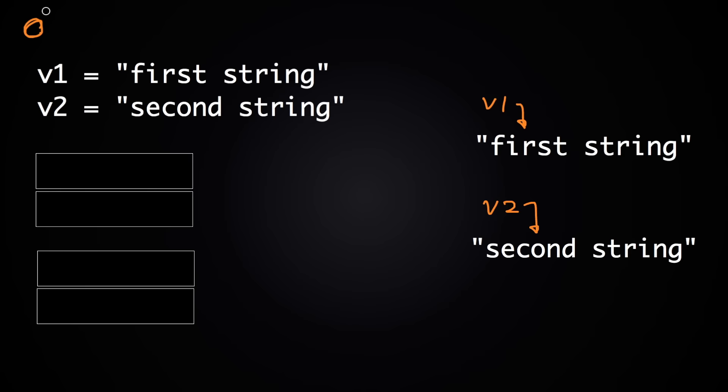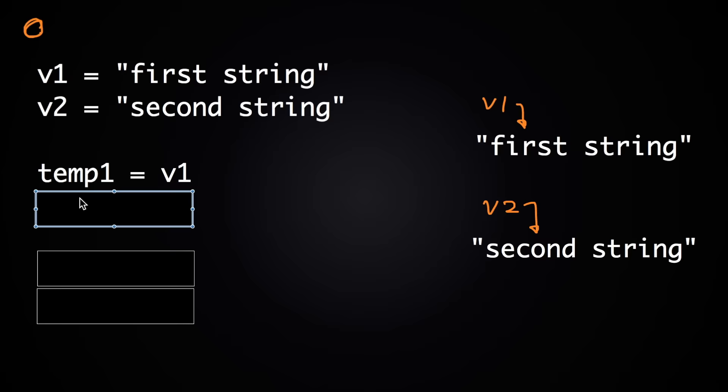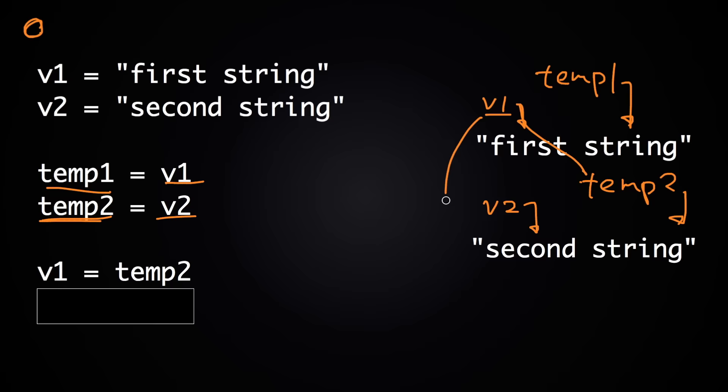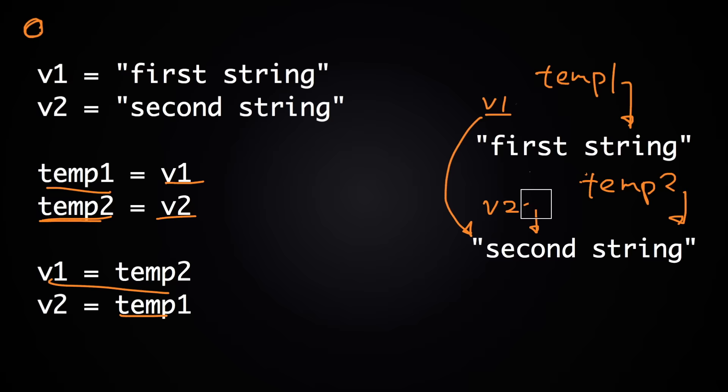Let's see what a good solution looks like. The first option is to use two temporary variables — temp1 and temp2. Set temp1 to what v1 refers to, which is 'first string,' and temp2 to what v2 refers to, which is 'second string.' Then swap them: v1 = temp2, so v1 now refers to 'second string,' and v2 = temp1, so v2 now refers to 'first string.' This works correctly.